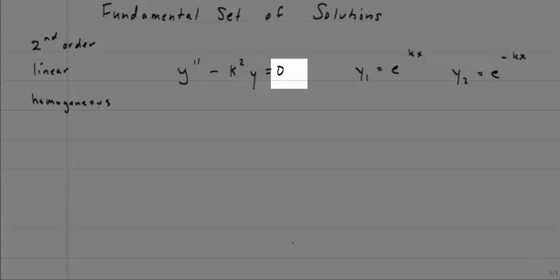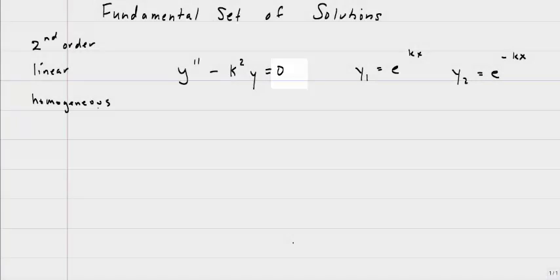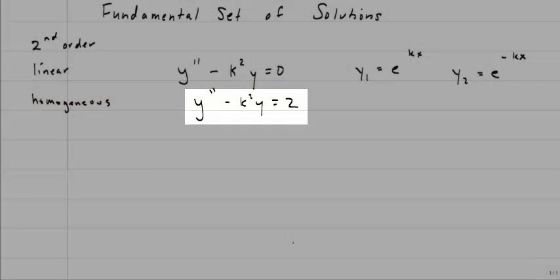In this case, it's when the right-hand side of the equation, that is what normally is the g(x), is equal to zero. That is, there's nothing that does not have the dependent variable. This would not be homogeneous.